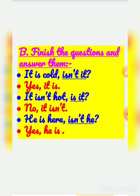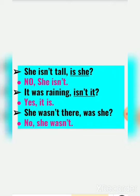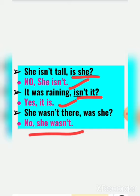Now you have to finish the question and answer it also. 'It is cold. Isn't it?' — Yes, it is. 'It isn't hot. Is it?' — No, it isn't. 'He is here. Isn't he?' — Yes, he is. 'She isn't tall. Is she?' — No, she isn't. 'It was raining. Wasn't it?' — Yes, it was. 'She wasn't there. Was she?' — No, she wasn't. So with a simple sentence, you have to make it into a question and then answer it.